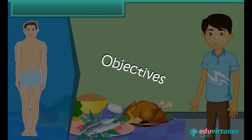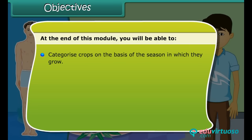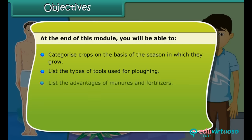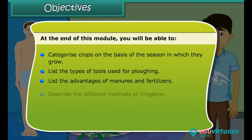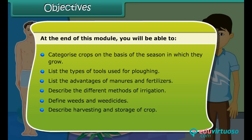Objectives. At the end of this module, you will be able to: categorize crops on the basis of seasons in which they grow; list the types of tools used for plowing; list the advantages of manure and fertilizers; describe the different methods of irrigation; define weeds and weedicides; describe harvesting and storage of crops; and explain animal husbandry.